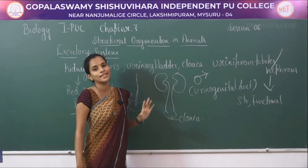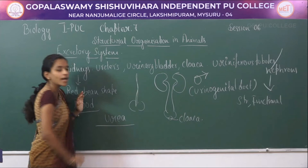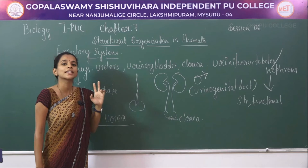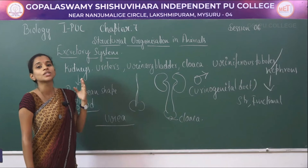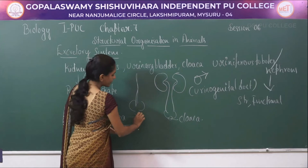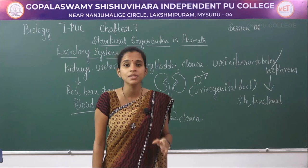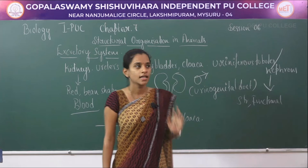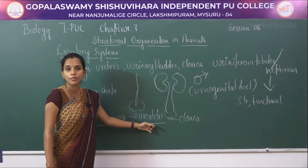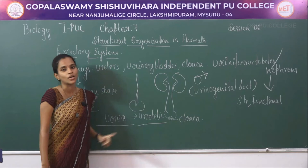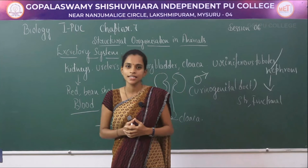The excretory waste released by a frog is urea. Organisms which release urea as their excretory product are called ureotelic organisms. Ureotelic organisms excrete urea as their nitrogenous waste. The frog is one example of a ureotelic organism.